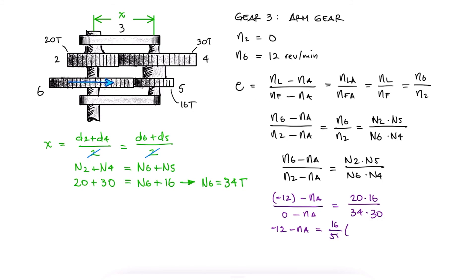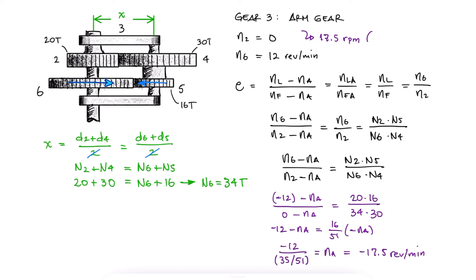Using these values, we solve for the speed of the arm, and either with the mathematical sign or a quick direction analysis, we see that the arm gear, or gear 3, is rotating clockwise as viewed from the bottom of the figure.